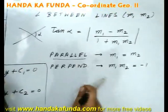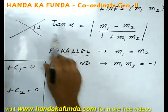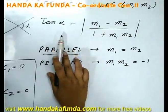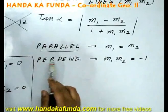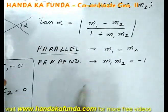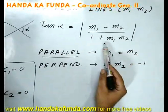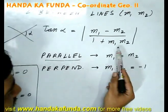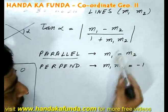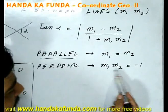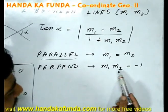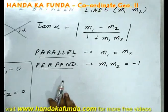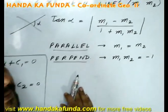What if the two lines are perpendicular to each other? That will mean alpha will be equal to 90 degrees, and that would mean tan alpha will tend to infinity. For tan alpha to tend to infinity, the denominator on the right hand side should become 0. If my denominator becomes 0, then 1 plus m1 m2 is 0. That will mean the product of the slopes, that is m1 m2, should be equal to minus 1. And that is the condition for lines to be perpendicular to each other.